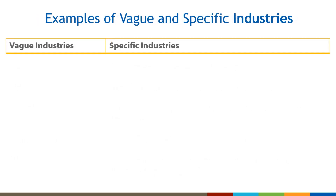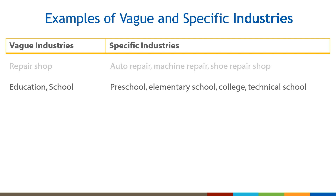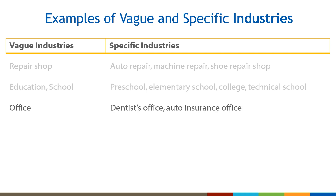Here are some examples of vague and more specific responses for a person's industry. If the person says they work in a repair shop, ask what type — responses might be auto repair shop, machine repair, or shoe repair shop. Another common vague response is 'education' or 'school' — ask what kind of educational facility or type of school. Some examples are preschool, elementary school, college, or air conditioning technical school. If the person works in an office, find out what kind — for example, a dentist's office or an auto insurance office.